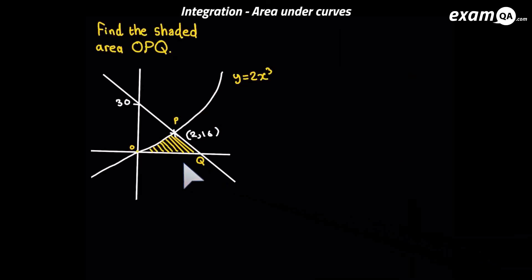So here we've got a slightly trickier question. We need to work out this area and it's bounded by the curve and also another line. So how do we work this out?